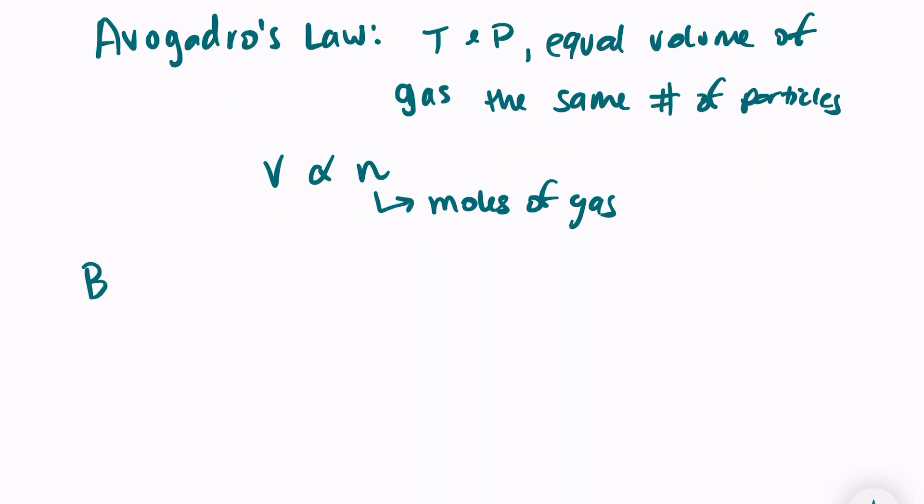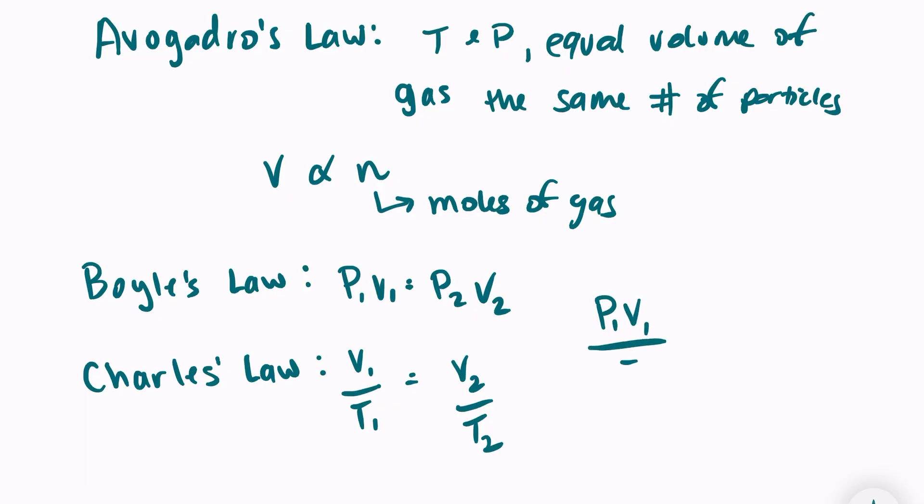We also have Boyle's law, which relates pressure and volume. His law says that P1 V1 equals P2 V2, or pressure 1 volume 1 equals pressure 2 volume 2. Then we have Charles' law, and he relates volume and temperature. He says volume 1 over temperature 1 equals volume 2 over temperature 2. We can combine these into one larger law and say P1 V1 over T1 equals P2 V2 over T2.